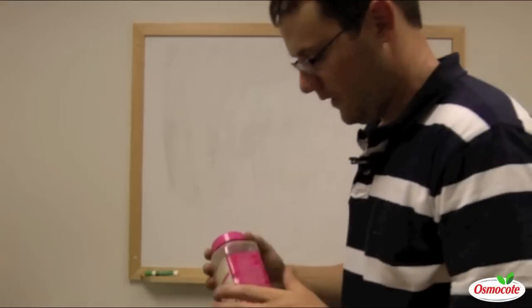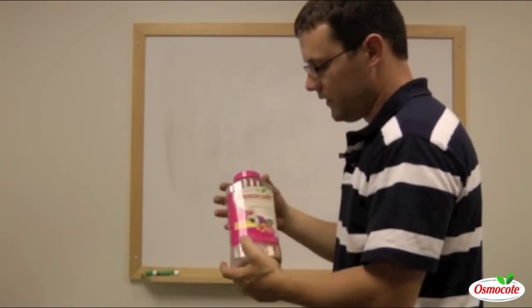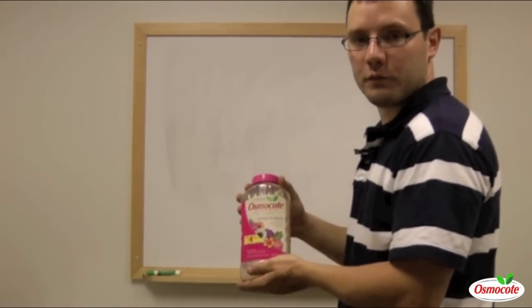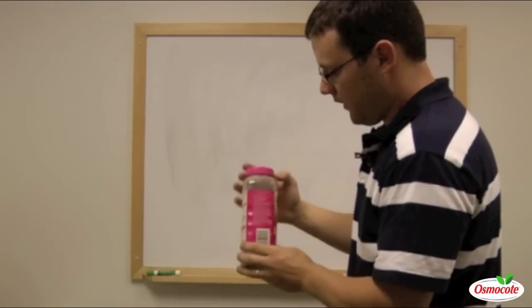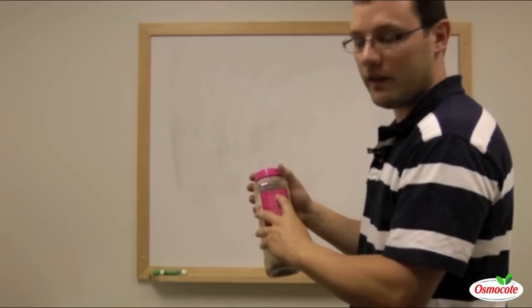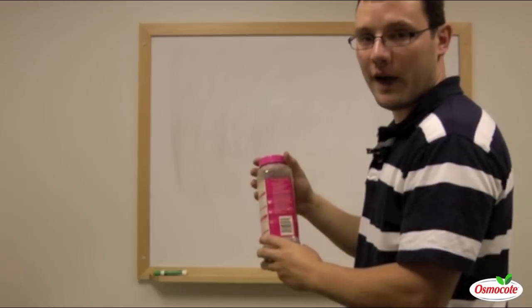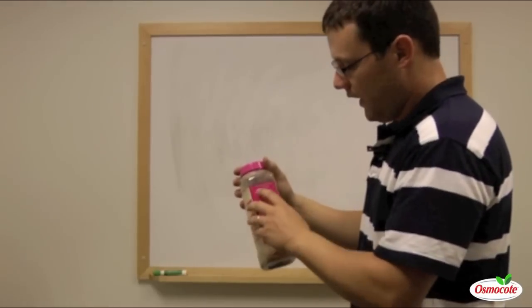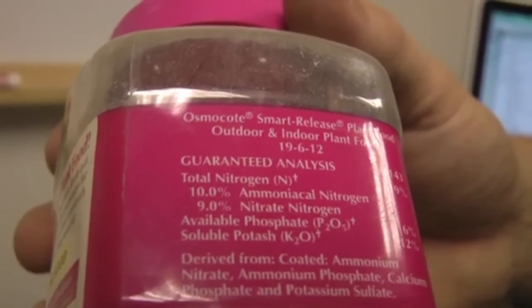So to do that, we're going to use Osmocote. And on the side of our Osmocote, it actually tells us the percentage of NPK by weight in Osmocote, and it turns out to be 19-6-12.